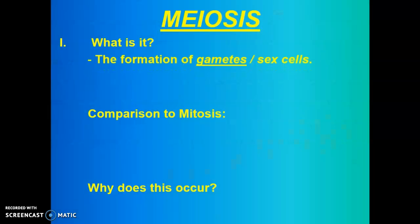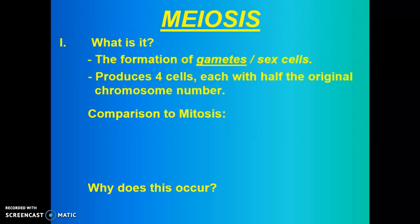Meiosis — what is it overall? It is the creation or formation of gametes or sex cells. So instead of just making identical copies of somatic or body cells, this time we're actually going to be producing sperm or egg cells. Instead of producing two identical cells, we will make four, and each one of those four cells will have half the original chromosome number. So for example, if it's a human cell, it won't have 46 — it'll have 23, half the original number.